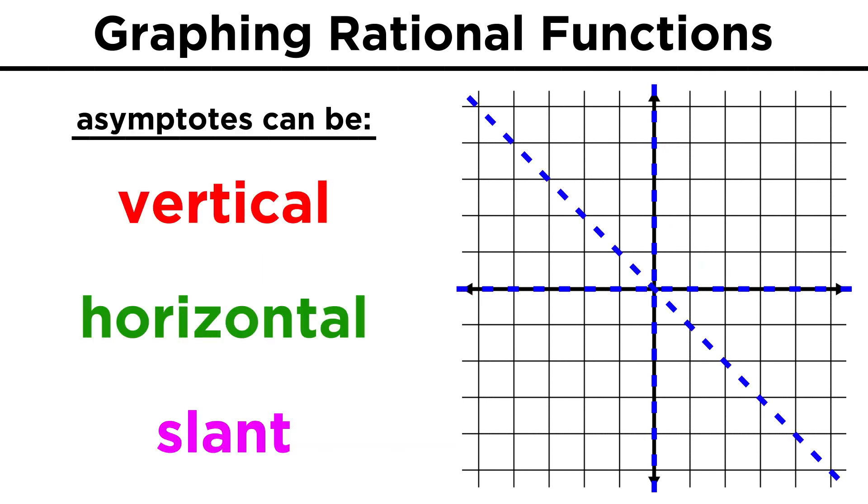Asymptotes can be vertical, horizontal, or at an angle, and finding these will be the key to graphing rational functions, so let's learn how to find them.